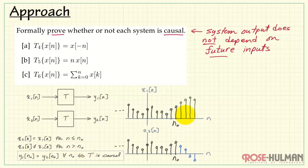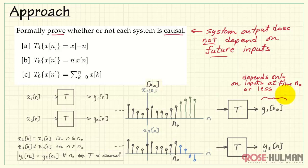After that, however, they are allowed to diverge. So we'll picture x1 as being different than x2 beyond n0. We then apply these two different signals to the same system T to produce outputs y1 and y2. Now at time n0, all of the previous history of the system behavior is encapsulated in this one value. Now, if y1 of n0 depends only on inputs at time n0 or less, then we say that the system is causal.